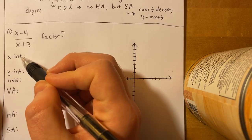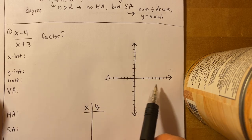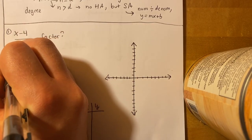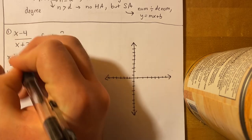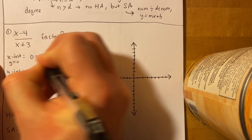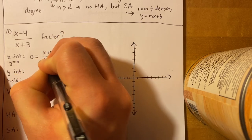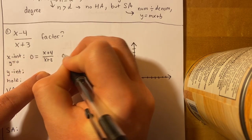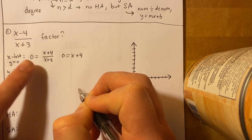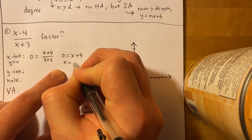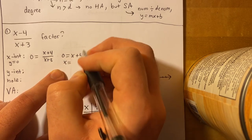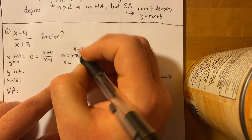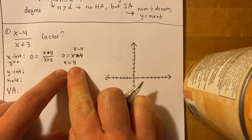So we're going to find out all of the key features so we can graph with no issues. For the x-intercept — remember, that's when y equals zero — you set the whole thing equal to zero. Multiply both sides by (x + 3), and you're left with zero equals x minus 4. So x equals 4 is your x-intercept.